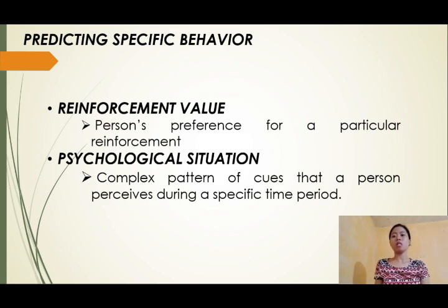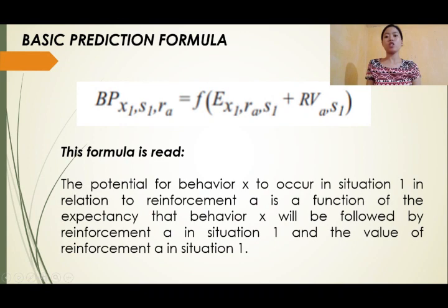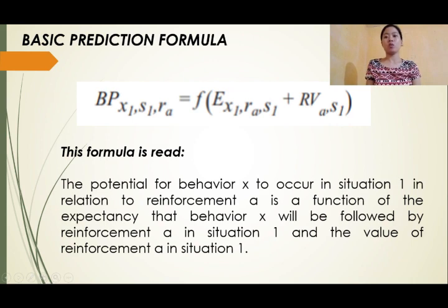The fourth variable is Psychological Situation — that part of the external and internal world to which a person is responding. Behavior is a function of the interaction of people with their meaningful environment. The Basic Prediction Formula states that the potential for a behavior to occur in a particular situation in relation to a given reinforcement is a function of people's expectancy that their behavior will be followed by that reinforcement in that situation.